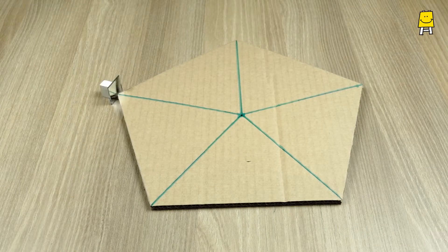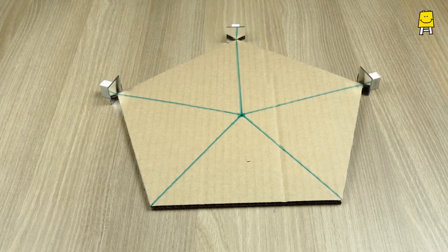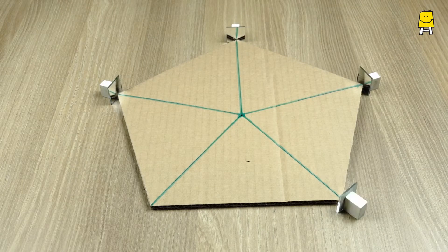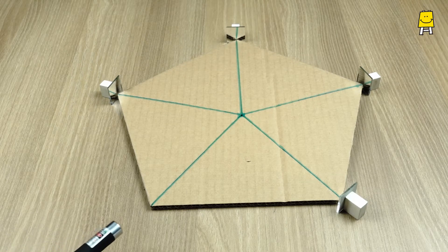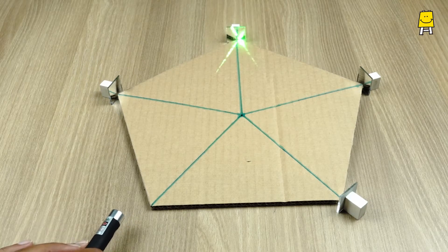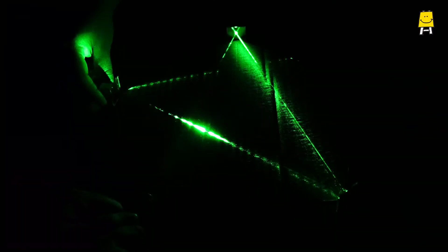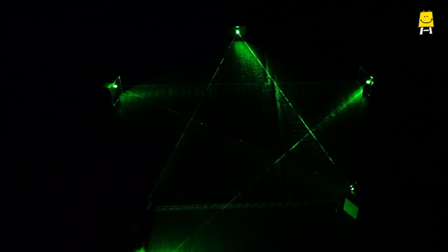Imagine mirrors at 4 out of 5 corners of the pentagon. Shine the laser beam from the 5th corner on one of the mirrors. Adjust the other mirrors to form a star-like shape.